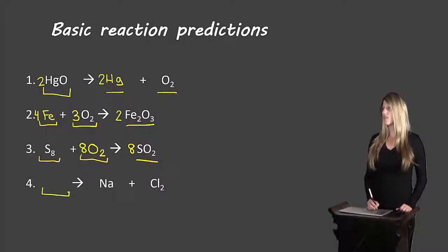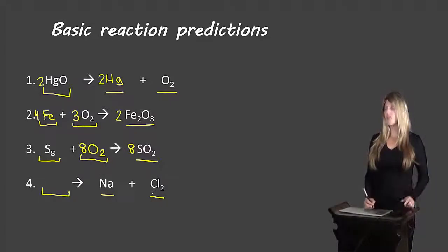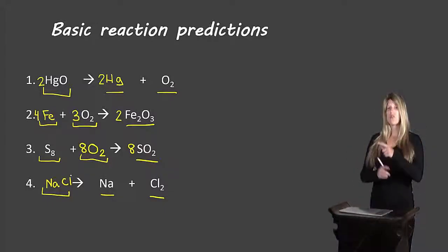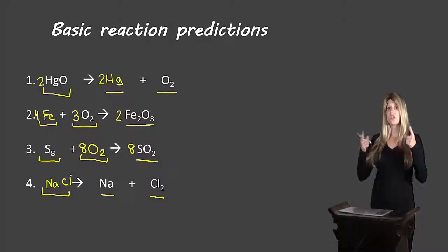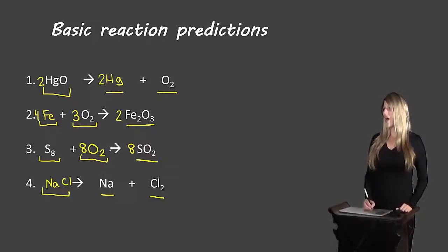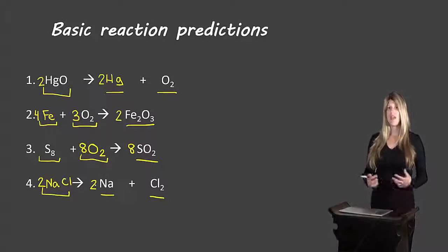The last example has one reactant and two products, so it's a decomposition reaction. We see sodium and chlorine on the right, which means they must appear on the left as the compound. Using the crossing over or zero sum rule: sodium has a 1+ charge and chlorine has a 1− charge, so we need one of each — giving us the formula NaCl. To balance, there are two chlorines on the right, so we place a coefficient of 2 in front of NaCl. That requires a coefficient of 2 in front of sodium on the left, and now everything is balanced.